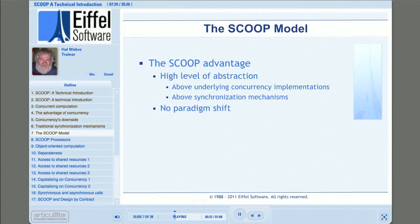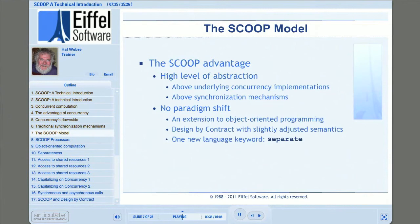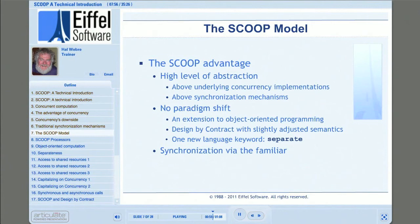Second, SCOOP allows you to use the tools and techniques with which you're already familiar. SCOOP is simply a broadening of our view of object-oriented programming. To support SCOOP in Eiffel, only one new keyword — 'separate' — has been added to the Eiffel language. Design by Contract, the backbone of the Eiffel development method, is also integral to SCOOP with contract semantics adapted slightly to support concurrency. Third, SCOOP uses the familiar act of passing arguments to routines as an indicator of the need for synchronized access.